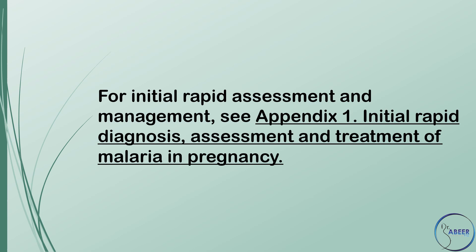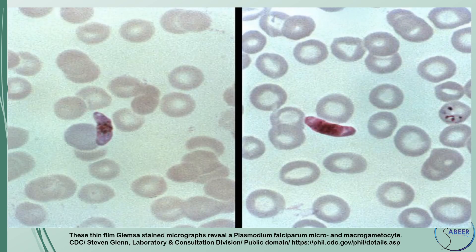Background: Malaria is the most important parasitic infection in humans and is the tropical disease most commonly imported into the UK. Approximately 75% of cases are caused by Plasmodium falciparum, and there is an average of 5 to 15 deaths a year — a mortality rate of approximately 0.5 to 1%. Immigrants and 2nd and 3rd generation relatives returning home, assuming they are immune from malaria, are by far the highest risk group.